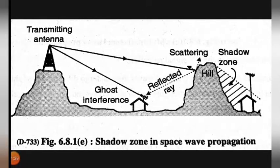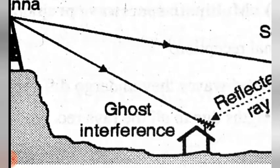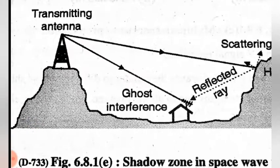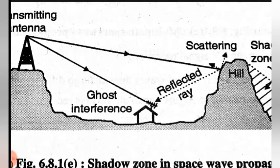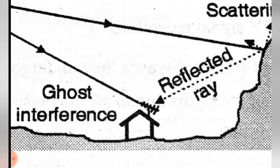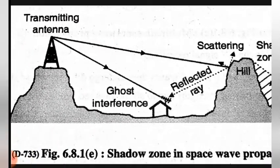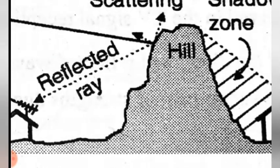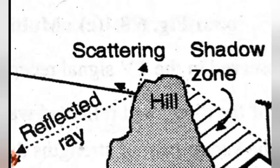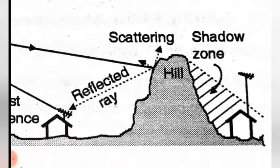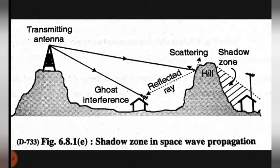Next point is the shadow zone in space wave propagation. Ghost interference means — दो पहाड़ों के बीच में अगर अपना घर हो, और उसके बाद reflection होता है, तो जो घर में TV पर channels आते हैं, वो weak signal होता है because of the hills. The space wave travels very close to the ground, hills, buildings and trees. These objects absorb as well as scatter the energy.